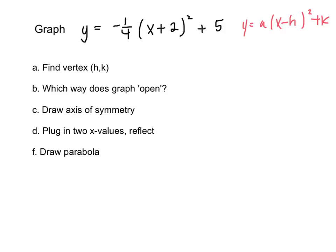We're going to graph y equals negative 1 fourth times the quantity x plus 2 squared plus 5. The general vertex form equation is y equals a times x minus h squared plus k, where (h, k) is the vertex. So our vertex is (-2, 5). Note that x plus 2 is really x minus negative 2, so h equals negative 2. Our a value is negative, so the graph opens down.